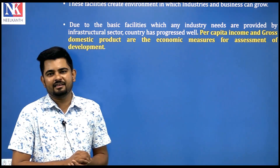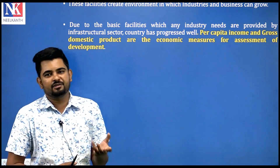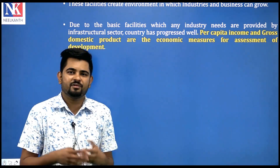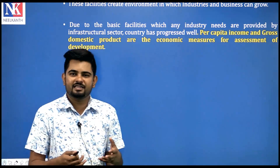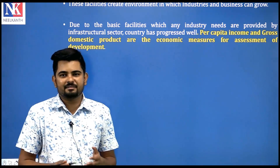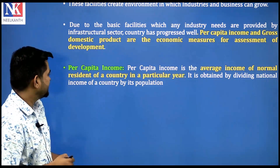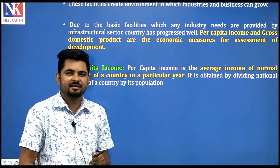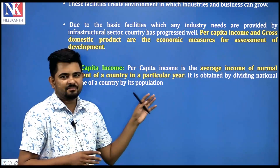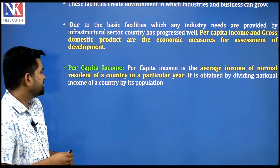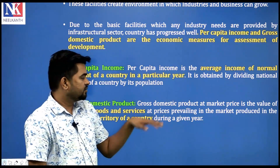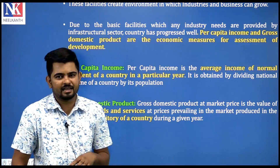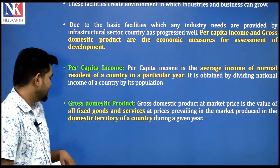Per capita income is the average income of a normal resident of a country in a particular year. Gross domestic product (GDP) at market price is the value of all final goods and services prevailing in the market, produced in the domestic territory of a country. If goods and services are transacted within the country, it comes under GDP, while inter-nation transactions are called GNP.